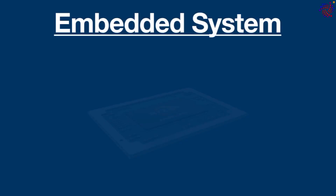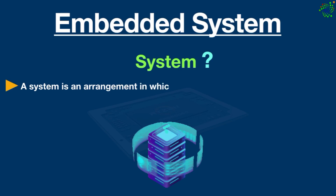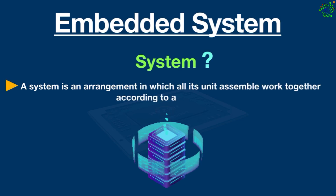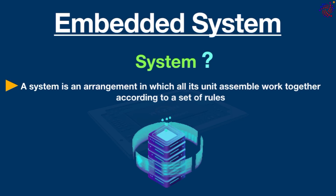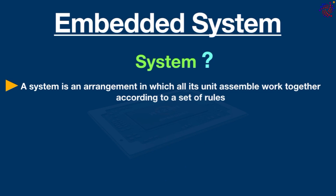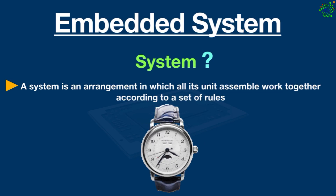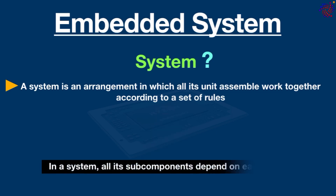Hello everyone. What is an embedded system? Before I explain an embedded system, it's really important to understand what is a system. A system is an arrangement in which all its units assemble and work together according to a set of rules. It can also be defined as a way of working, organizing, or doing one or many tasks according to a fixed plan. For example, a watch is a time-displaying system — its components follow a set of rules to show time. If one of its parts fails, the watch will stop working.